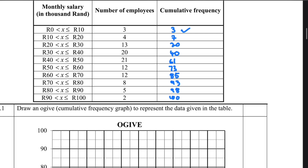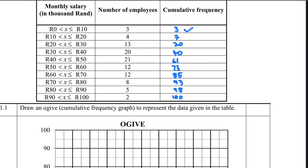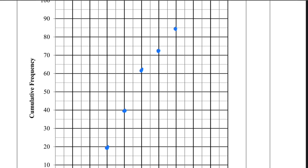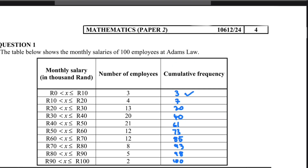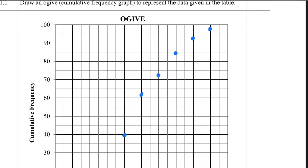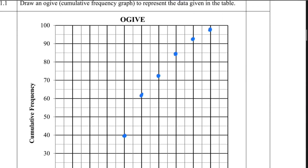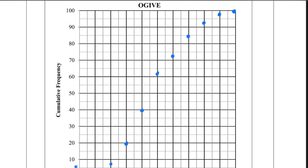From 40 to 50,000 the cumulative frequency is 61, so somewhere just slightly above that line. From 50 to 60,000 we have 73, plotted there. From 60 to 70,000 we have 85, and from 70 to 80,000 it's 93. From 80 to 90,000 we have 98, and at 90 to 100,000 we reach 100. Those are our coordinates — now we join all the dots and there we have our cumulative frequency graph for question 1.1.